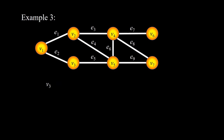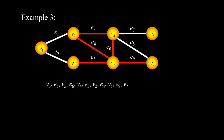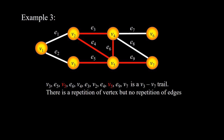Starting with V3, then E5, V5, E6, V4, E3, V2, E4, V5, and E9, V7. This is an example of a V3-V7 trail. The vertex V5 is repeated, but there is no edge repeated.